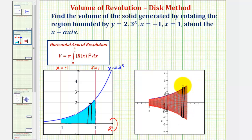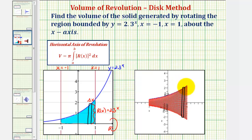Notice that the radius of this disk — our right circular cylinder — would be this length here, which we call r of x. In this case, that would just be the function value 2.3 raised to the power of x. And the width of the rectangle would be delta x, which if we think of this as a right circular cylinder, would be the height of the cylinder. Because we have delta x here, we integrate with respect to x, and the radius would be the function value 2.3 raised to the power of x.